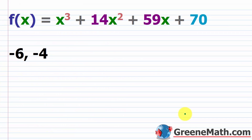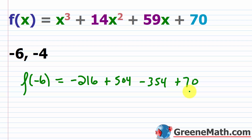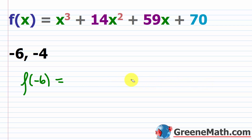Let's look at one more quick example. Usually the problems you see just give you two values and say prove that there's a zero between them. So all you need to do is find f of negative 6. Negative 6 cubed is negative 216, plus negative 6 squared is 36 times 14 which is 504, plus 59 times negative 6 which is negative 354, plus 70. Negative 216 plus 504 is 288; subtract 354 gives negative 66; add 70 gives 4. So one point is negative 6 comma 4.